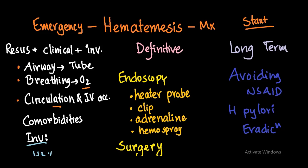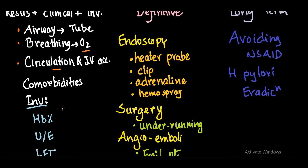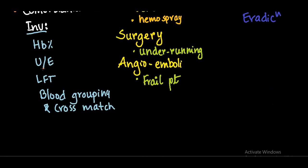Immediately give crystalloids, and if the patient is anemic or in shock, you can also give blood. Take a rapid history for comorbidities and check any previous reports. Take a blood sample for basic investigations.